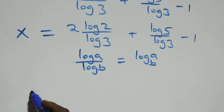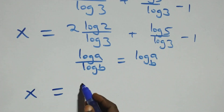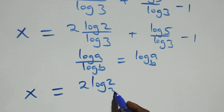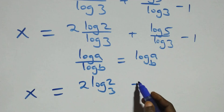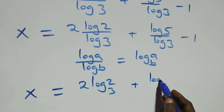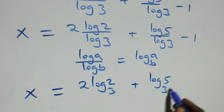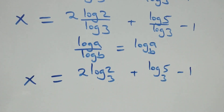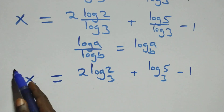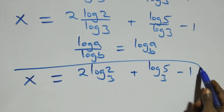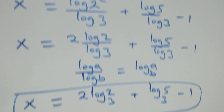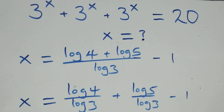So all we have here becomes x equals 2·log₂3 plus log₅3 minus 1. That is the value of x: 2·log₂3 plus log₅3 minus 1. Let's check if this satisfies the given problem.